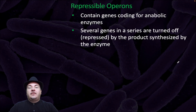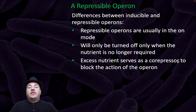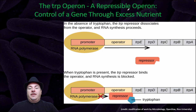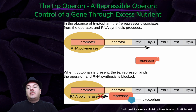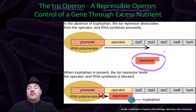The other type is repressible operons. These contain genes coding for anabolic enzymes. Several genes in a series are turned off or repressed by the products synthesized by the enzyme. Repressible operons are usually in the on mode and will only be turned off when the nutrient is no longer required. Excess nutrient serves as a co-repressor to block the action of the operon. An example is the trp operon. With the repressible operon, the default state of the repressor is actually to be turned off — the exact opposite of the inducible operon. So naturally the repressor is turned off.